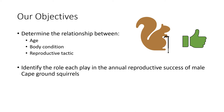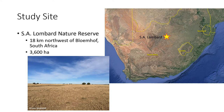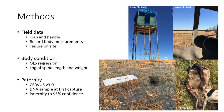We hypothesized that older males would have greater success and that age and body condition would be positively correlated with one another. Our research took place at the SA Lombard Nature Reserve in South Africa, which is primarily open grassland with small patches of bush. Field data was collected between 2011 and 2019, where we trapped animals to collect body measurements and gather genetic samples. Tenure on site was used as a proxy for age, as many males dispersed onto site and exact age was unknown.